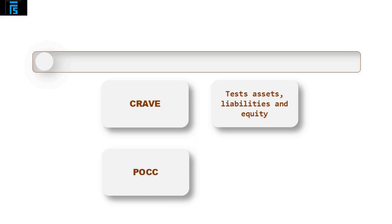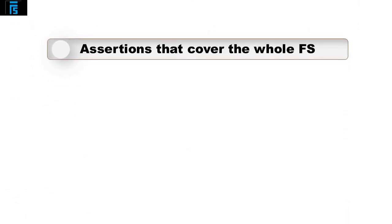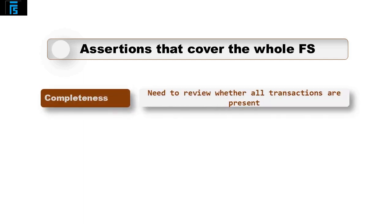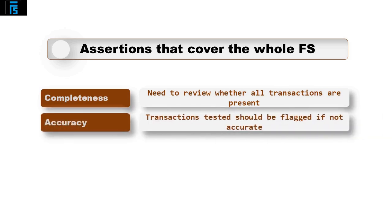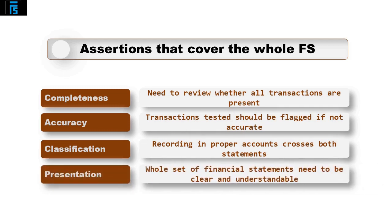The assertions within POC — Presentation, Occurrence, Classification and Cutoff — are used to test balances within the statement of profit and loss or income statement, covering all income and expenses. There are also assertions important for the whole of the financial statements: Completeness, Accuracy, Classification and Presentation can be used for all balances and transactions.